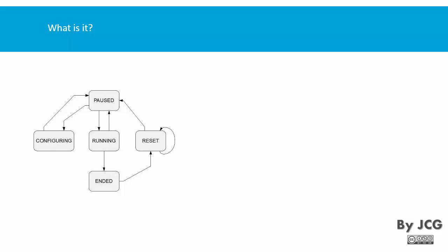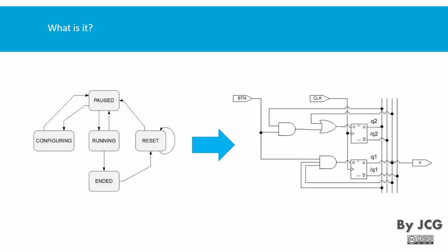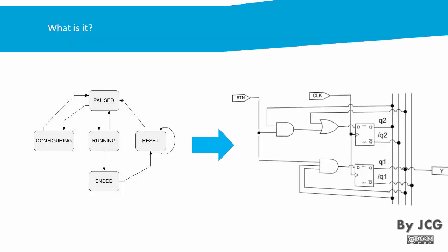Here we have a series of states — running, reset, paused, configuring, and ended — and we're saying how we want the system to behave. Of course this is not a complete diagram, it still needs work, but once we have the diagram of how we want the system to behave, we're going to try to get the circuit that implements this diagram. We're not analyzing it, we are designing it.